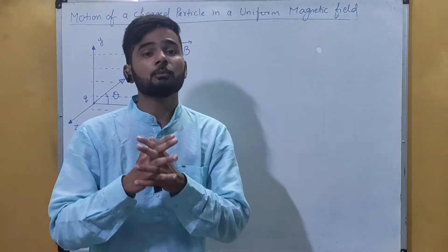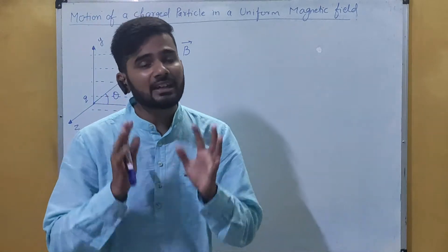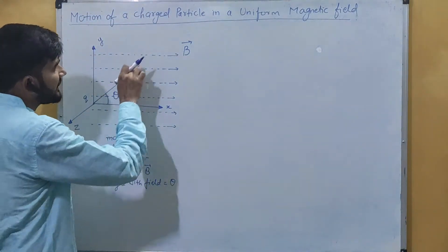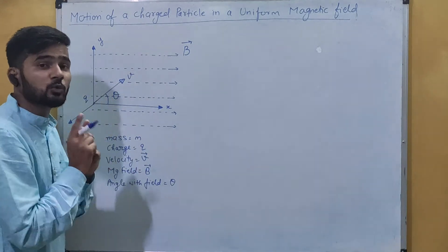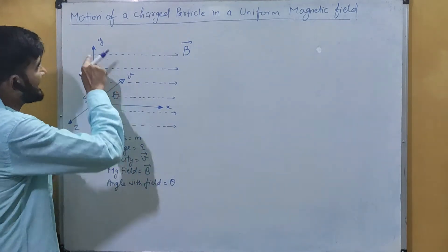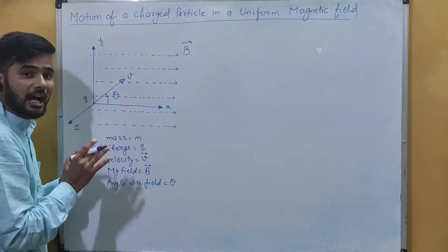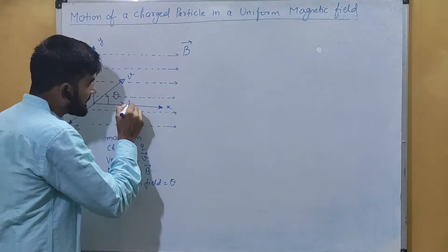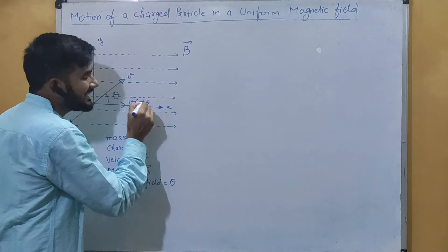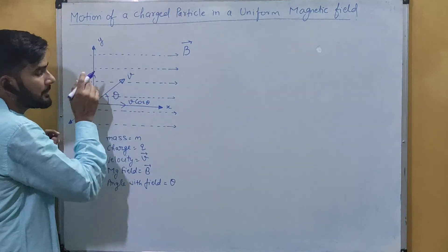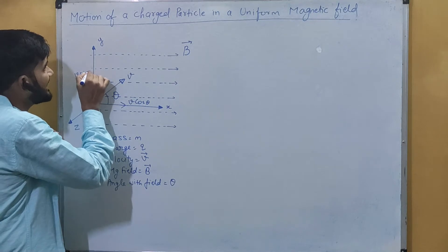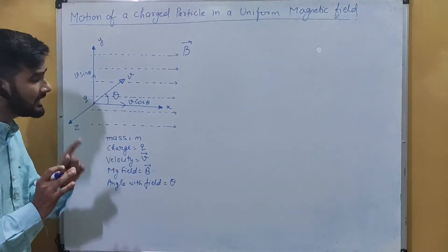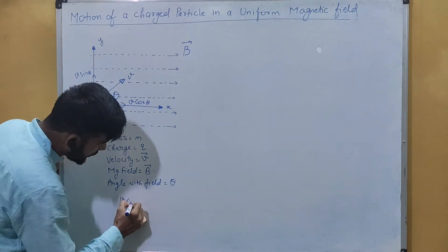When the particle is moving inside the magnetic field making an angle theta, we can resolve the velocity into two components. If we have a velocity direction, we can resolve it along x and y directions. Wherever we have theta, that component will be the cosine component, so that will be v cos theta. The other component will be v sin theta.